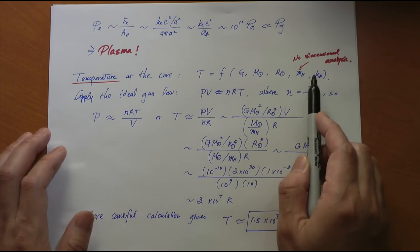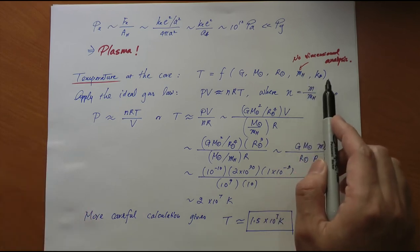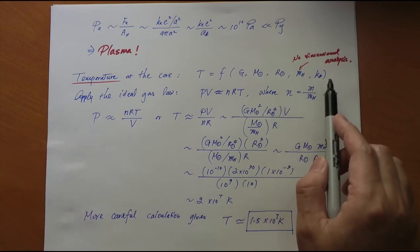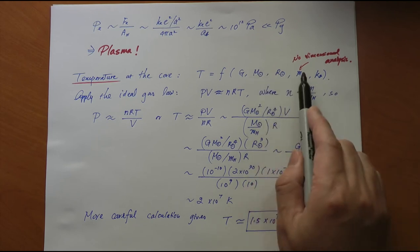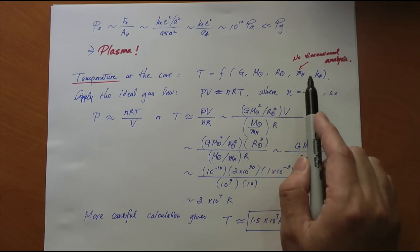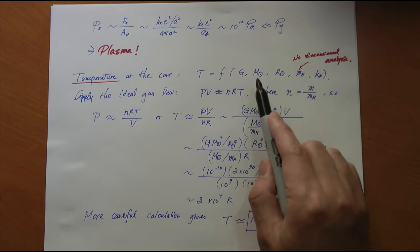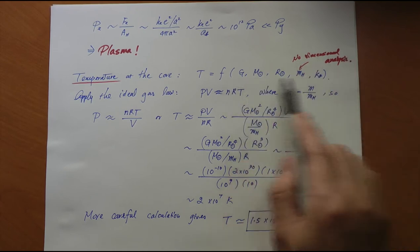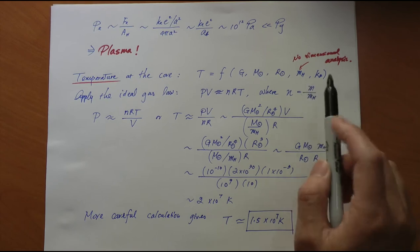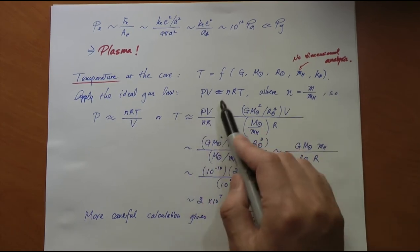We also have the Boltzmann constant, but that doesn't have its own dimension. But the fact that we have these two quantities of the same units ruins the simplicity of trying to solve this problem with dimensional analysis alone. So we cannot do dimensional analysis. Instead, let's do an ideal gas law estimation.